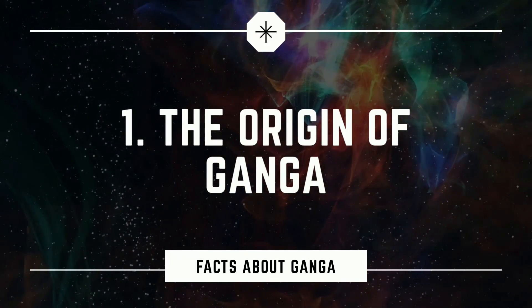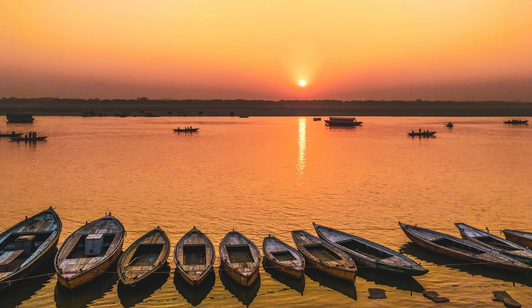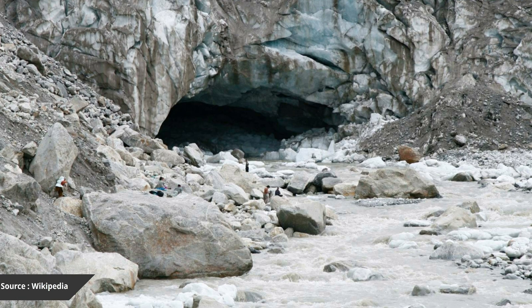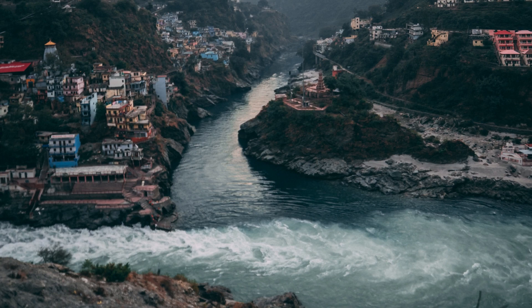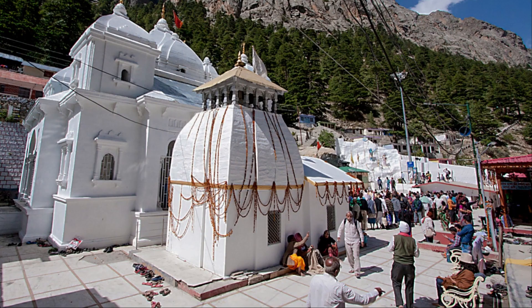The Ganga originated from Gomuk, which is located at the base of Gangotri and Khatilang glacier in Uttarakhand. Gomuk is about 18 km from the town Gangotri, and according to Hindu mythology it is regarded as the birthplace of Ganga on earth. At Gangotri there is a Ganga temple, which is famous as the Chhota Chardham temple in Garoali.